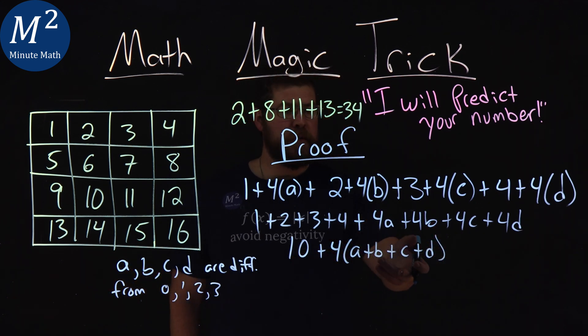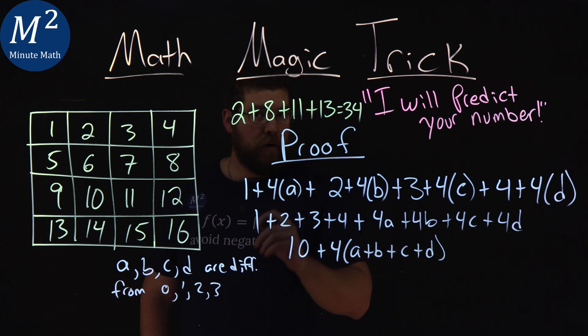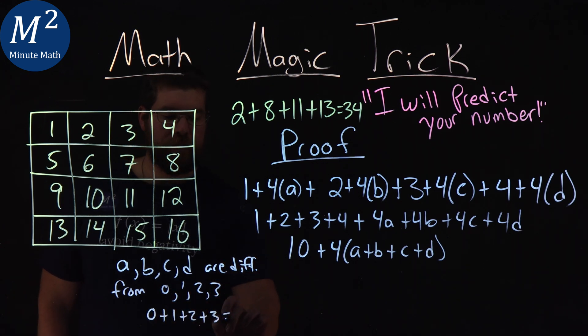If we only knew what a plus b plus c plus d were—we don't know specifically what a is, what b is, what c is, what d is, but we know when we add them all up, because each one has to be different, that's zero plus one plus two plus three equals six.